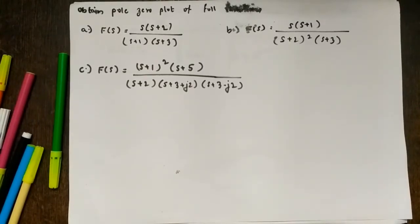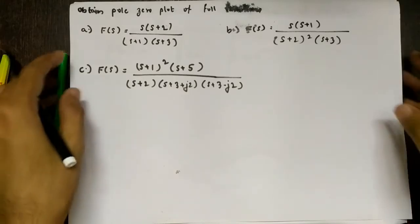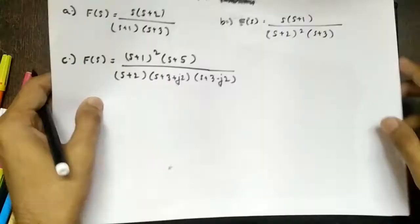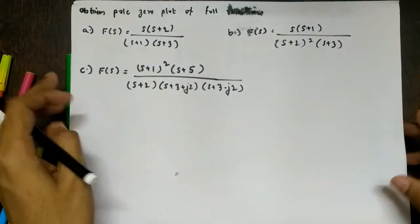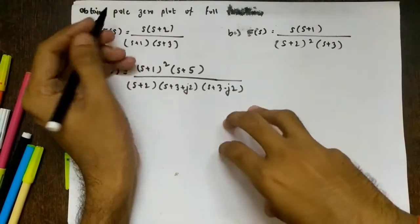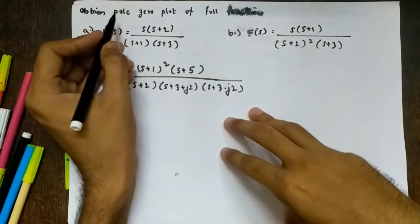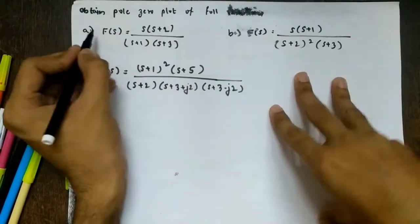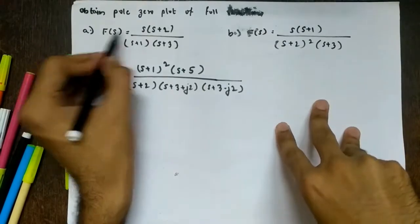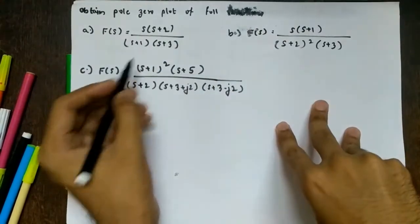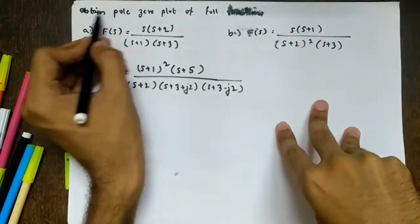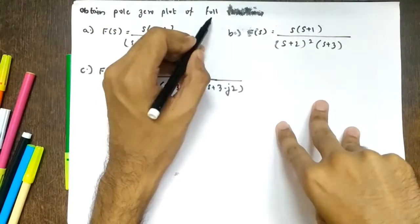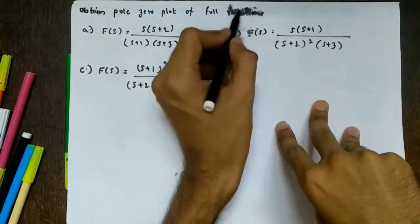We are now into the third lecture on network functions — this is the fourth module. The next topic is to find the poles and zeros of a function. Three functions are given, and the question is: obtain the pole-zero plot of the following functions.